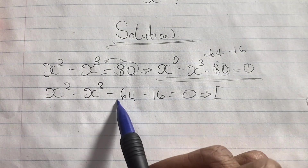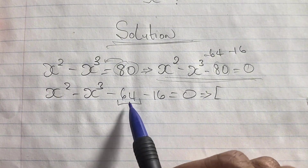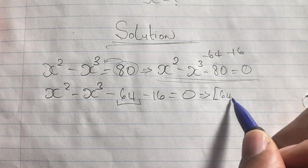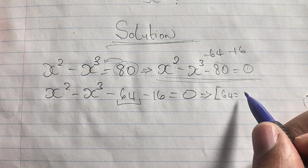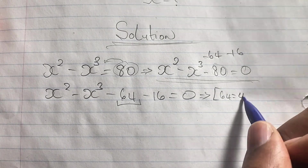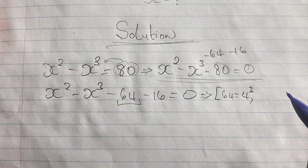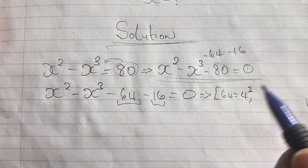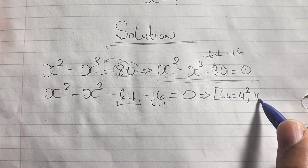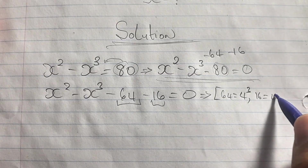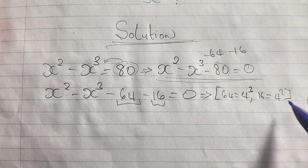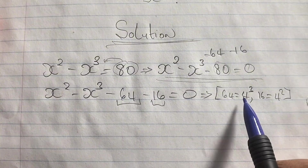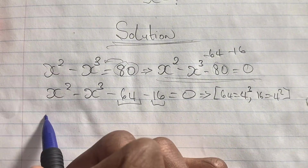Now, 64 is a cubic number — meaning we multiply a number by itself three times — so 64 is four cubed. Similarly, 16 is a squared number, which is four squared. With this, we'll rewrite our equation using these values.